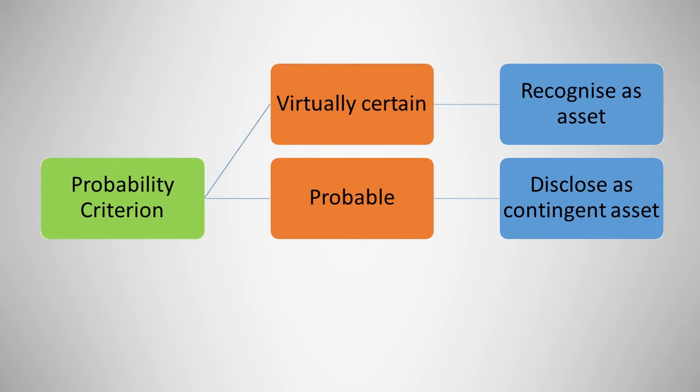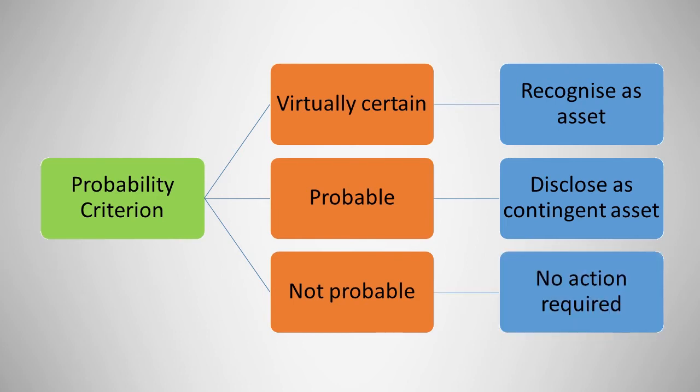The third classification is not probable. As the name suggests, it is not likely that economic benefits will flow. When this classification is applicable, the contingent asset does not require disclosure.